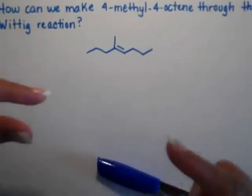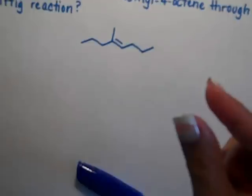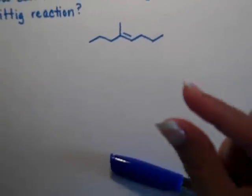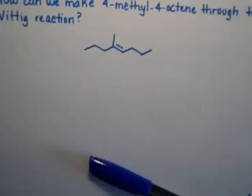When you do the Wittig reaction you're putting two double bonded carbons together. One is the ylide, that one is attached to a phosphorus. The other one is the ketone or the aldehyde.